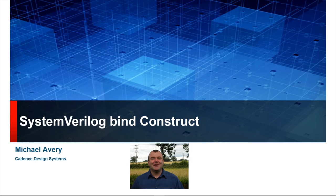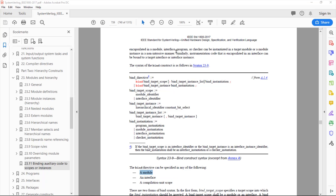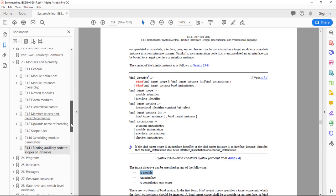You'll find this in the language reference manual. We're shown here the latest version at the time of making this video. This is the IEEE standard 1800-2017 version. Where you'll find binding is in section 23 here, modules and hierarchy. So it's a purely SystemVerilog construct.